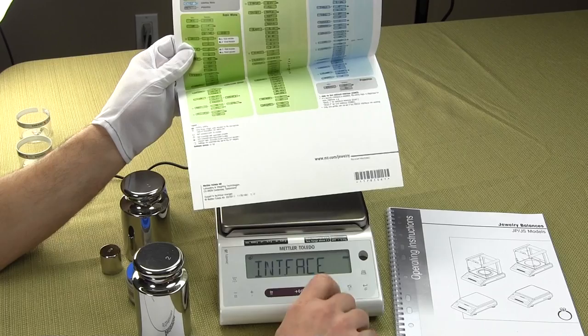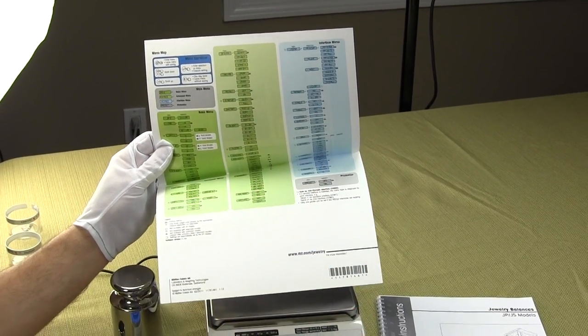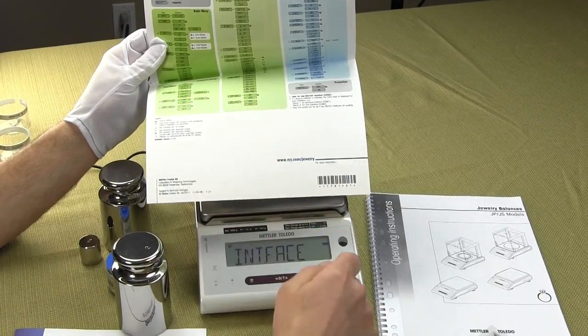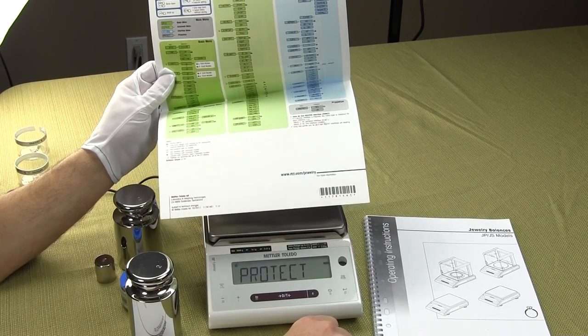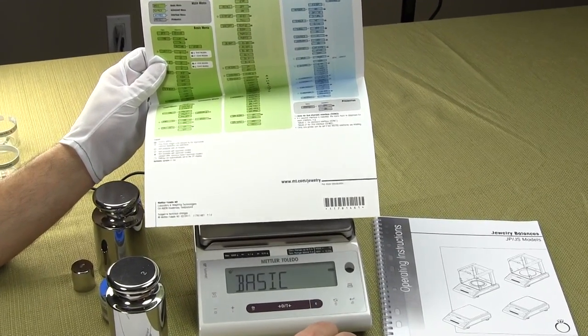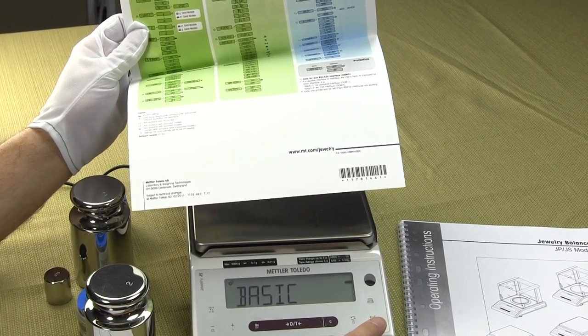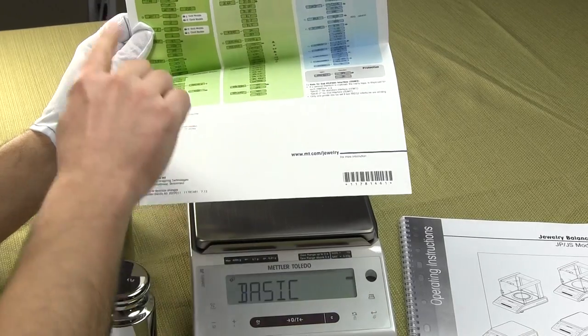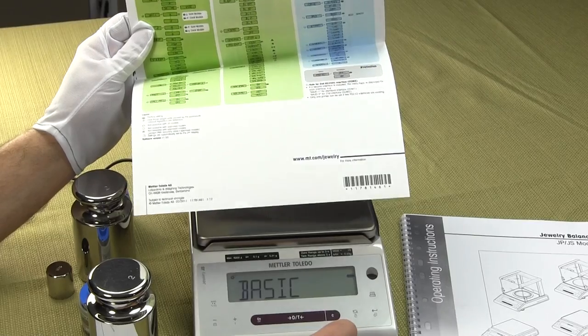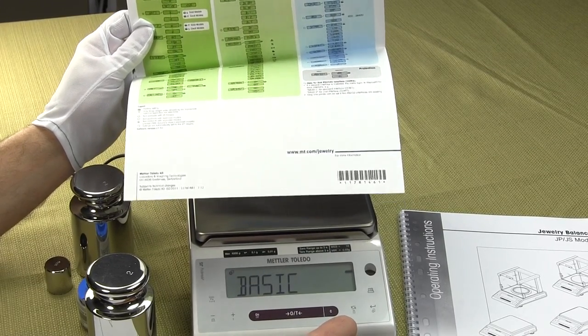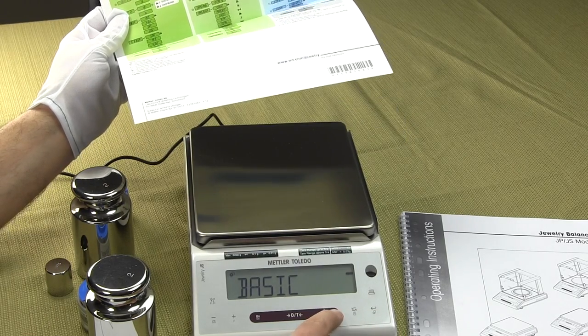So now we're in the menu for all the interface. This is in regards to the RS 232. Press it again. This is protective mode so you can lock it out so that nobody can use your balance. If I'm in the basic mode, this key brings you through the sub menus. There's almost 40 different menu settings altogether. So there's a ton of flexibility with this Mettler Toledo balance. And to get out of everything, you can just press the C.